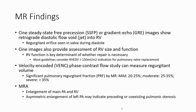MRI findings: steady-state free precession gradient echo imaging shows some retrograde diastolic flow void into the right ventricle. MRI also provides assessment of right ventricular size and function. Velocity-encoded phase contrast flow study can measure regurgitant volume. There is enlargement of the main pulmonary artery and right ventricle. Asymmetric enlargement of a branch pulmonary artery may indicate residual post-operative pulmonary stenosis.